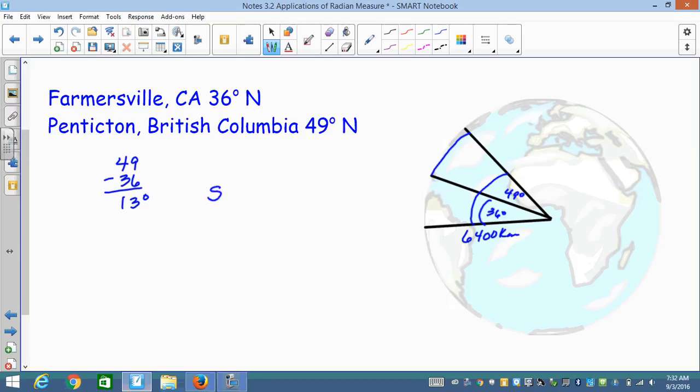S equals r theta. Remember, theta has to be in radians. So S equals 6400 times 13 pi over 180. You do the math on that one. You're going to get S equals 1452.11.